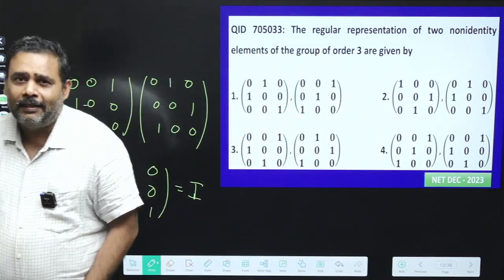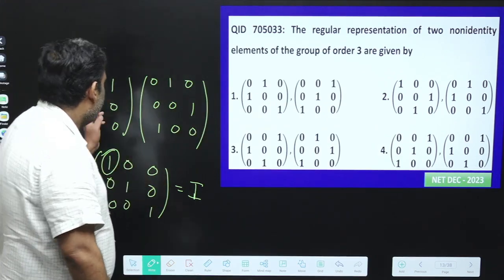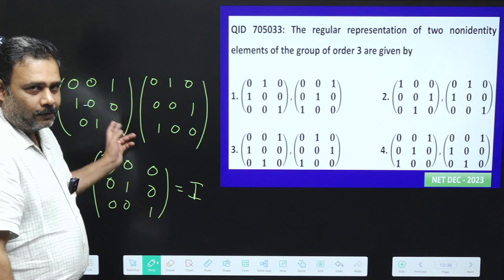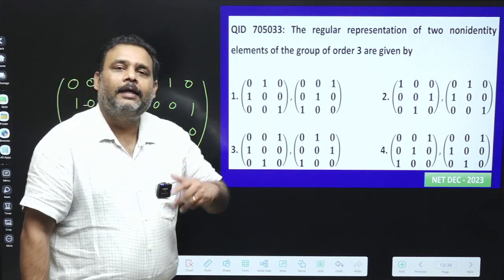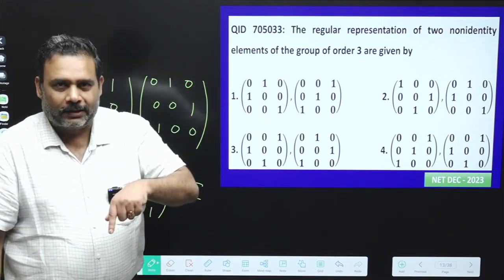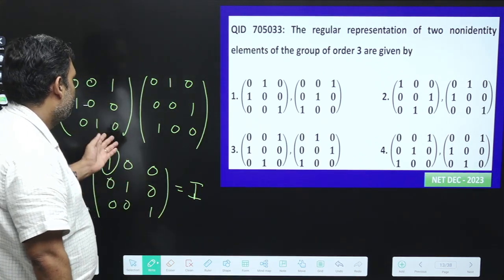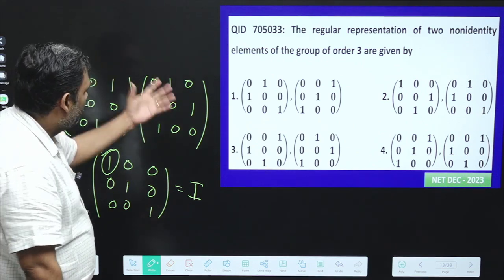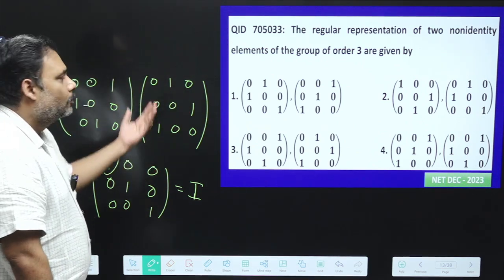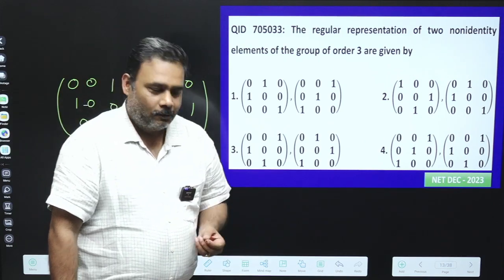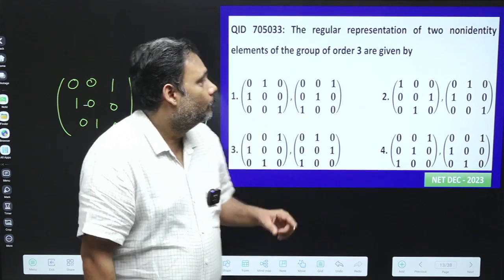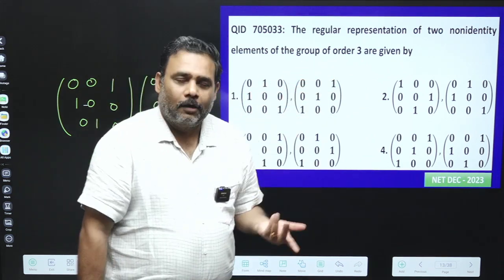And the second thing is all about that these two elements are inverse of each other because in a group you have identity element and there must be inverse element. So if you will check, these two will be inverse because the A operation B is giving identity. So one will be inverse to the other one. So it is a very simple group, very straightforward group. And obviously this is order of three.